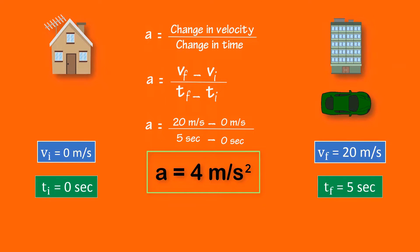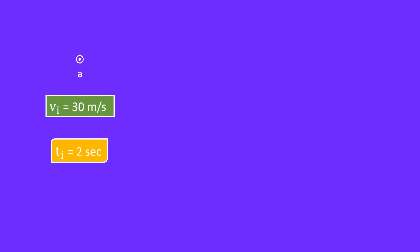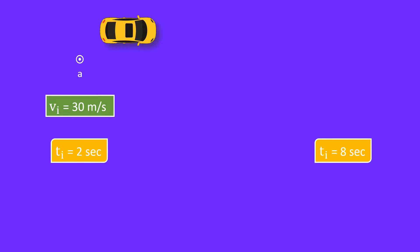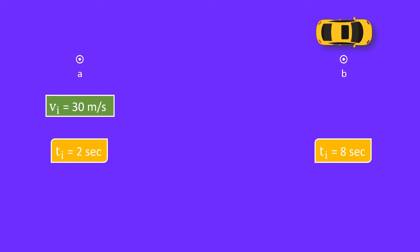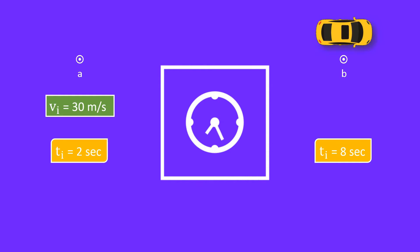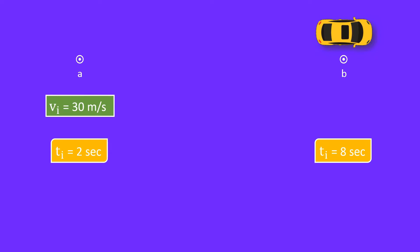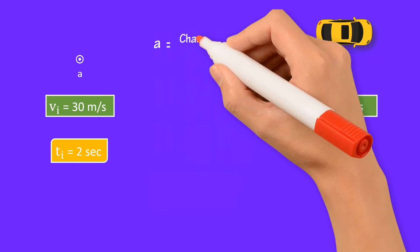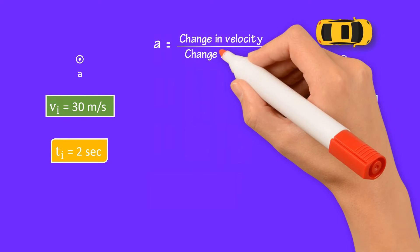Let me give you another quick and helpful example of acceleration. Let the initial velocity of a body be 30 meters per second at point A, and the initial time noted down was 2 seconds. After 8 seconds, the body came to rest at point B. Here, 30 meters per second is the initial velocity and 2 seconds is the initial time. The car stopped at point B, so its final velocity is 0 meters per second. Acceleration equals change in velocity divided by change in time.